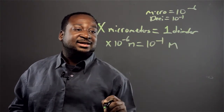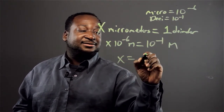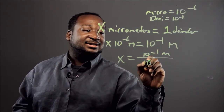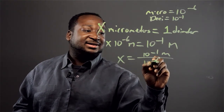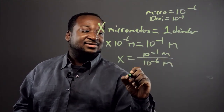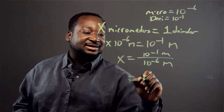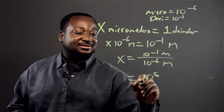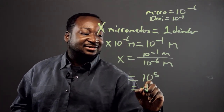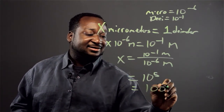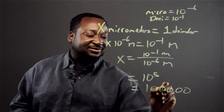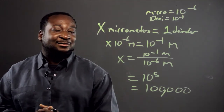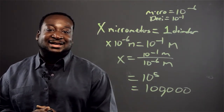So X equals 10 to the negative 1 meters over 10 to the negative 6 meters, which equals 10 to the 5. So the answer is — 1, 2, 3, 4, 5 — a hundred thousand. A hundred thousand micrometers are in a decimeter.